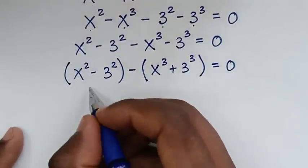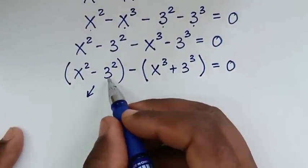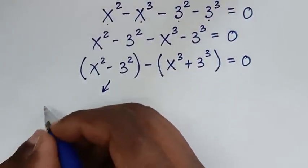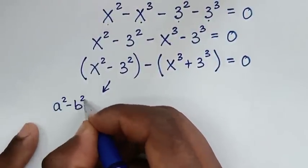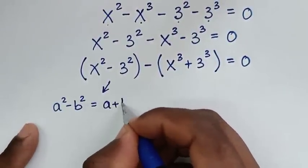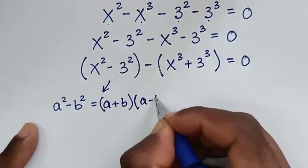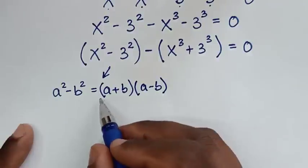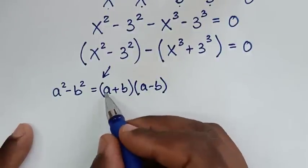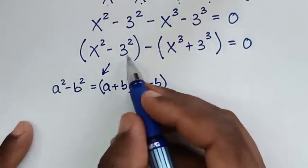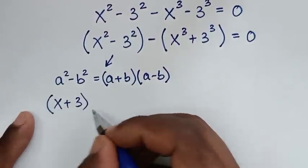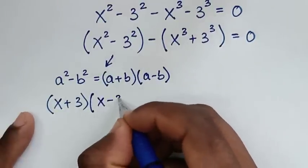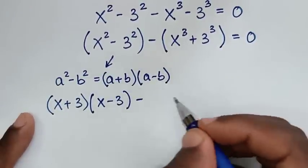In the next step, x squared minus 3 squared is in the form of a perfect square, so we apply the rule: a squared minus b squared equals (a plus b)(a minus b). So it becomes (x plus 3)(x minus 3).